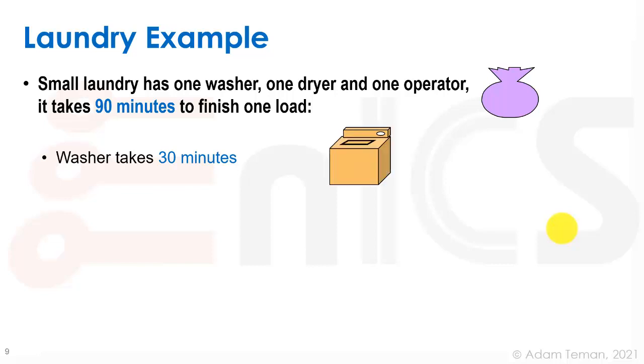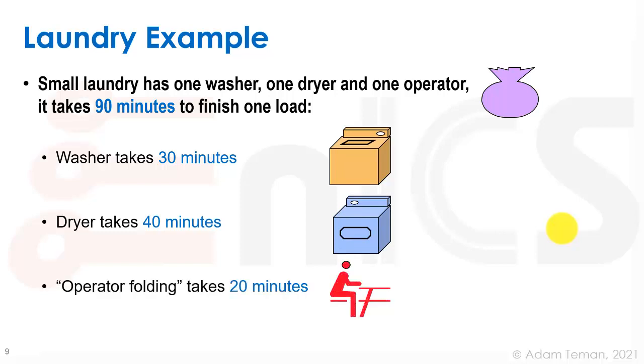The washer, which we'll draw with a washing machine, takes 30 minutes. The dryer then takes 40 minutes, so a total of 70 minutes, and then we need an operator here to fold the clothes and that takes another 20 minutes. So if we sum the three together, it takes us a total of 90 minutes to do one load of laundry.